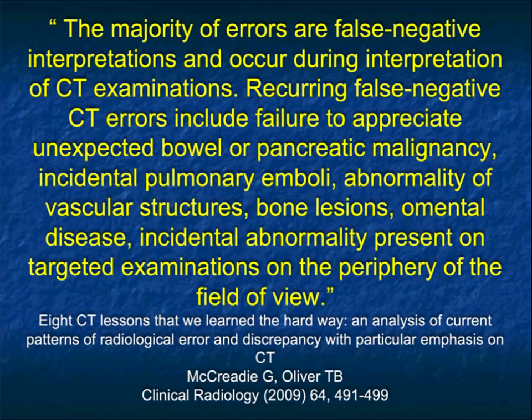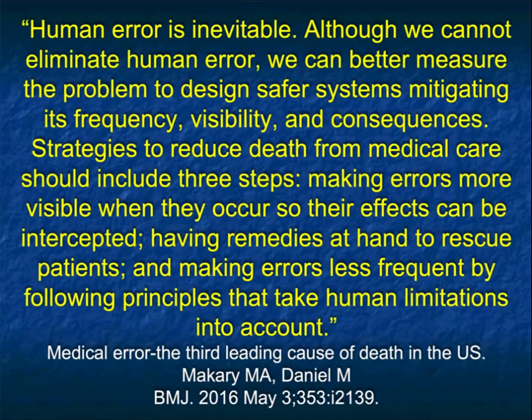In this article by McCready — more than a decade ago — the false negative CT errors included unexpected bowel or pancreatic malignancy, incidental PEs, vascular abnormalities, bone lesions, and incidental abnormalities at the periphery of the field of view. That is, you're looking for the pancreas and miss something in the kidney, or vice versa. Those same errors are still with us today.